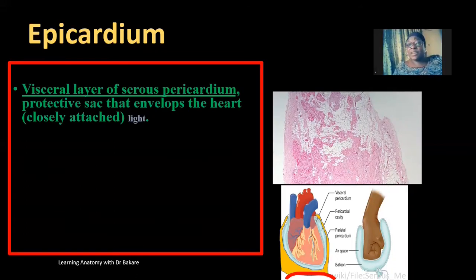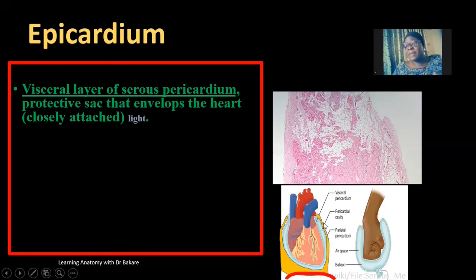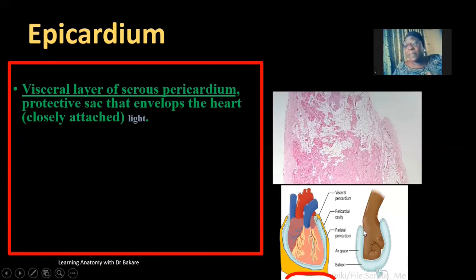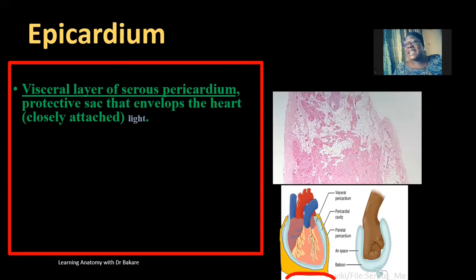Recall the lecture on the pericardium, where we subdivided it into the serous pericardium and the fibrous pericardium — the serous pericardium highlighted in blue, and the fibrous pericardium highlighted in yellow as the external layer. The serous pericardium is subdivided into two layers: the visceral pericardium, closely attached to the heart, and external to this, the parietal layer of the serous pericardium. So the epicardium also means the visceral layer of the serous pericardium, because it is the layer closely attached to the heart.